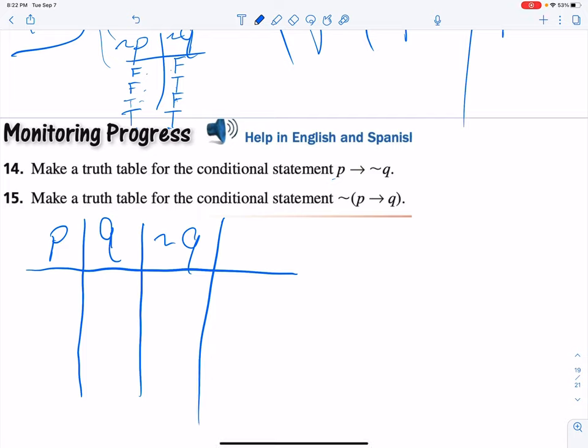And then for number 14, we want P implies the negation of Q. So we already have a P, we have a Q, we need the negation of Q. And then we'll go from there. And then the last one, we'll kind of fill this one in too.